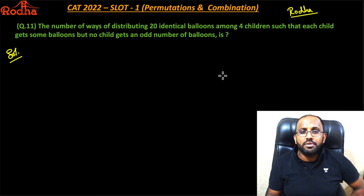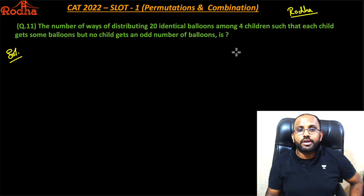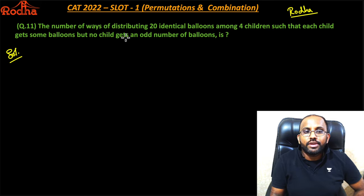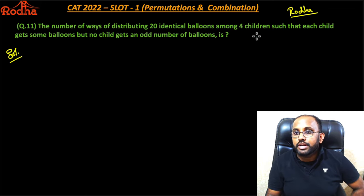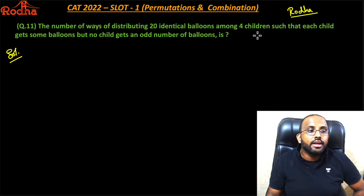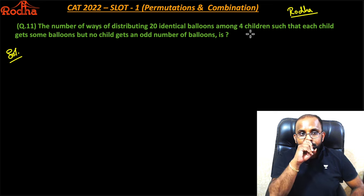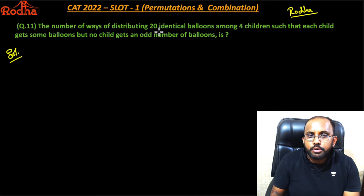If you know the fundamentals, it's a fairly easy question. It says: find the number of ways of distributing 20 identical balloons among four children such that each child gets some balloons but no child gets an odd number of balloons.